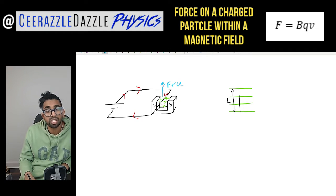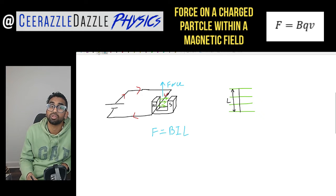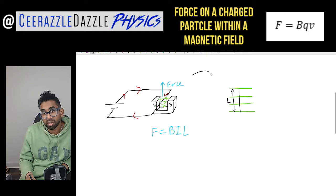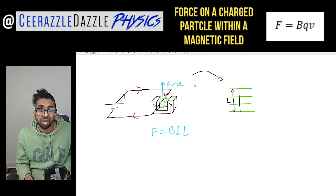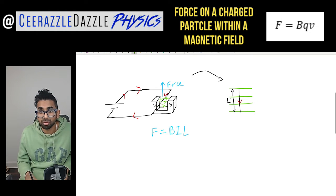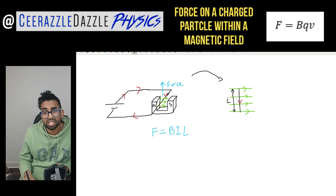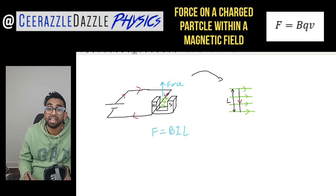Previously we identified that to calculate the magnitude of that force, the force on the conducting wire is equal to BIL. Then I drew this diagram — this is a bird's eye view. Imagine you look at this from top down: you'd see just the wire over here, the current going down through it, and the magnetic field going from left to right. The force on the conducting wire can be calculated by F is equal to BIL.